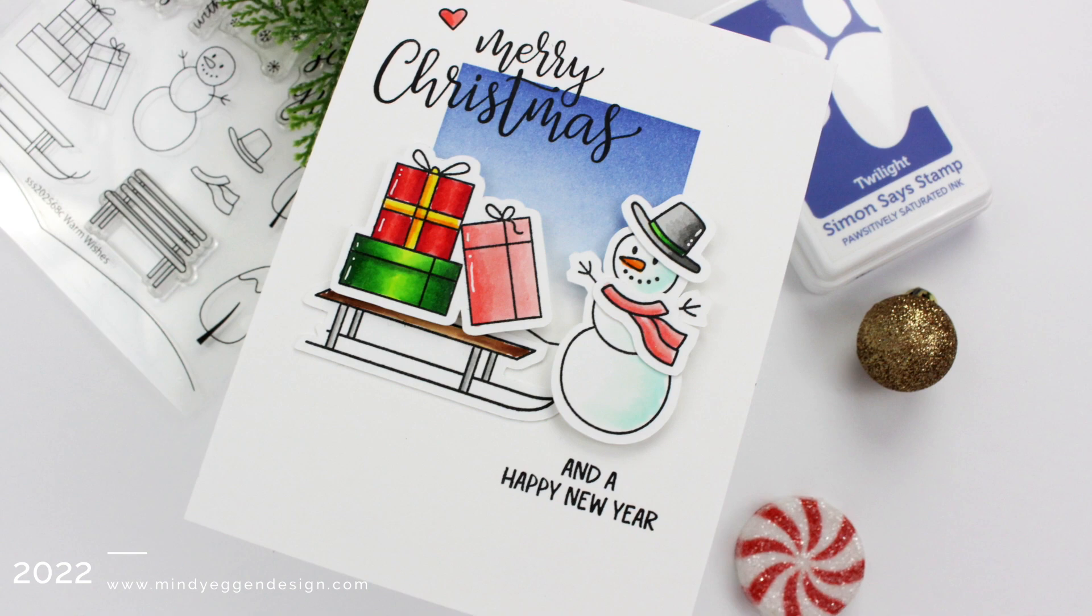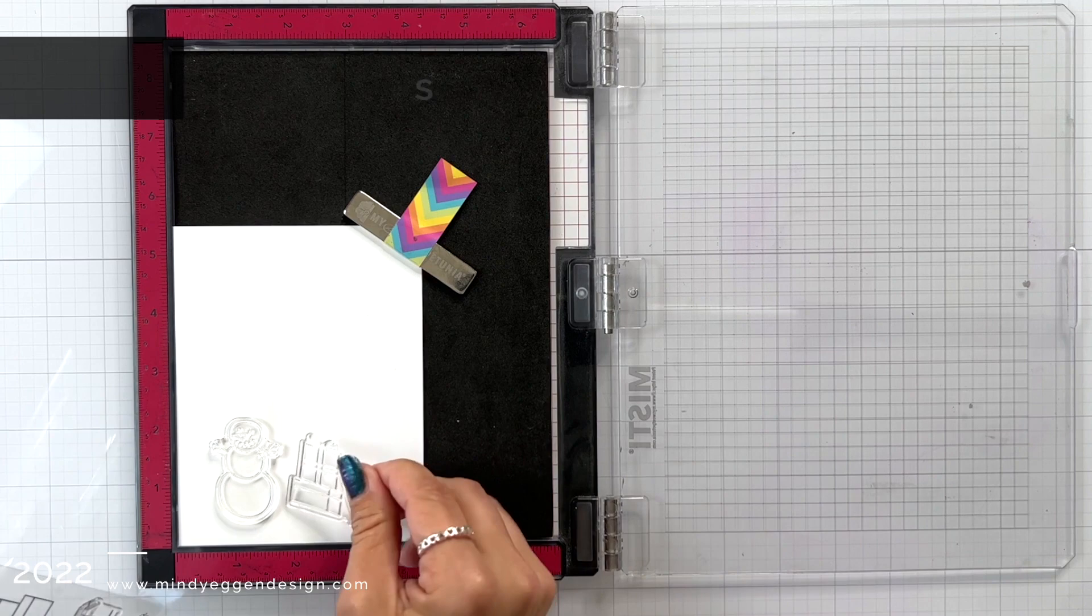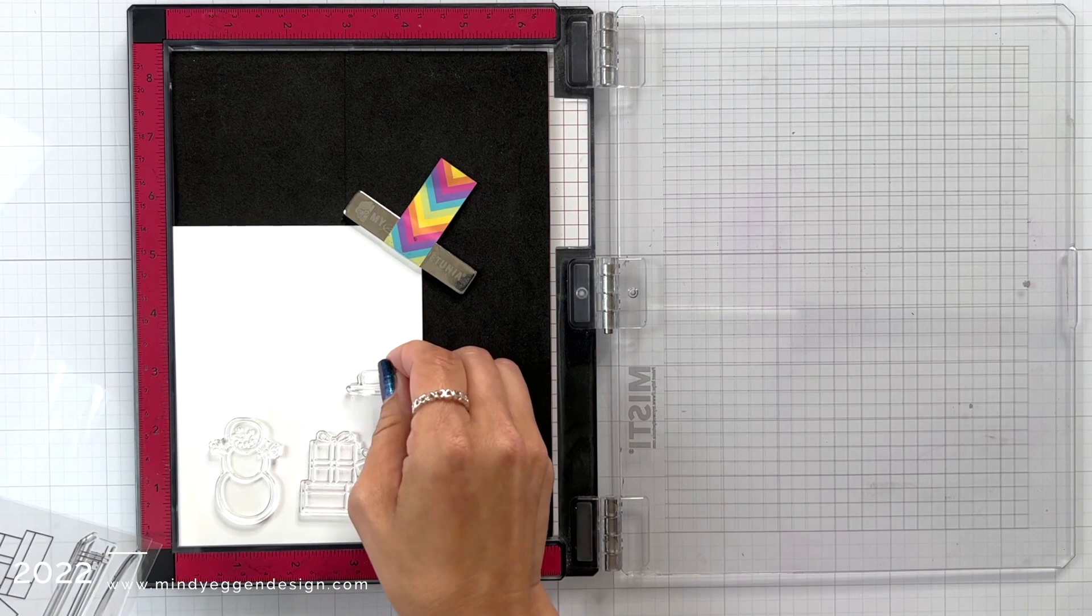This stamp set called Warm Wishes from Honey Bee Stamps is super adorable and has tons of images on here for scene building including sentiments. So I picked out a few images from the set that I wanted to work with.